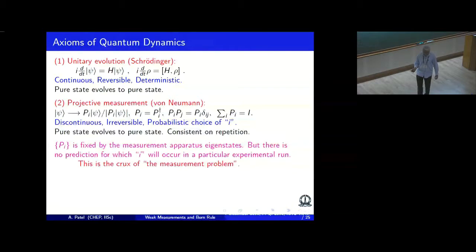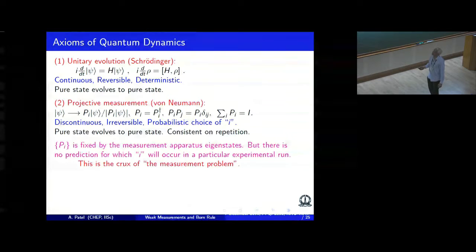The standard textbook quantum mechanics gives two rules for evolution of a state. Schrodinger evolution: unitary, continuous, reversible and deterministic. A projective measurement description of von Neumann: discontinuous, irreversible and probabilistic, but still it takes pure state to pure state and is consistent on repetition.